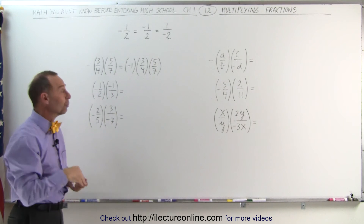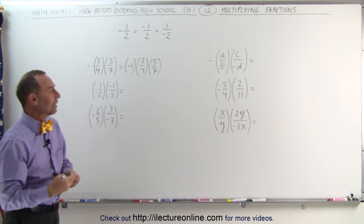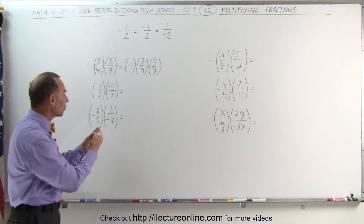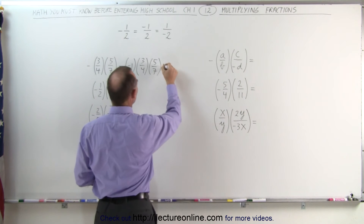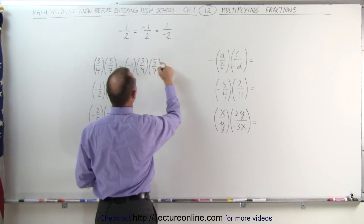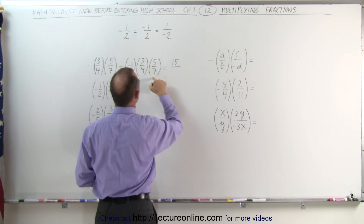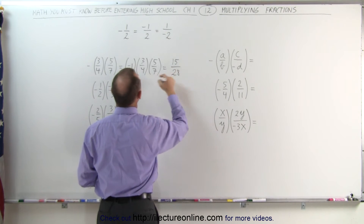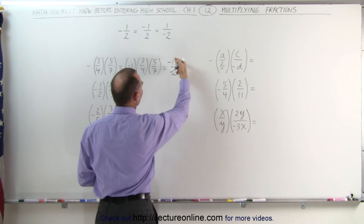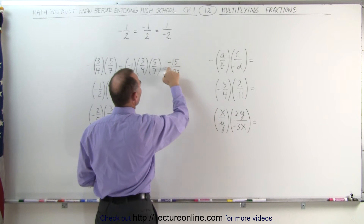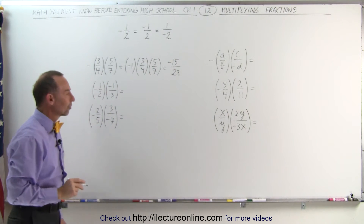The rule is: an odd number of negative signs means the answer will be negative. An even number of negative signs, when we multiply, the answer will be positive. This then becomes 3 times 5, which is 15, divided by 4 times 7, which is 28 — and we have a negative sign, which we can place anywhere: in front of the 15, in front of the fraction line, or in front of the 28. It doesn't make any difference.